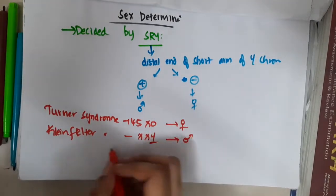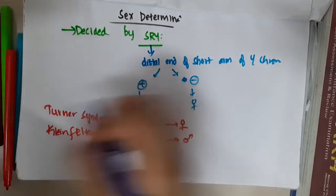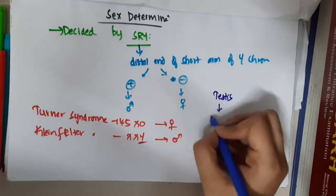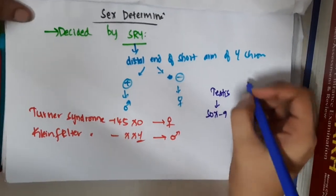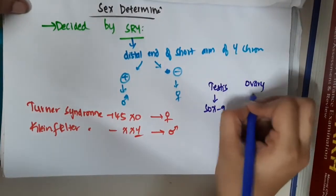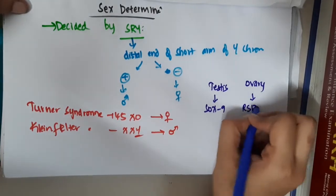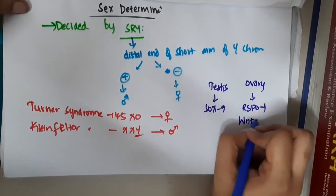If you see other genes, the genes which favor testes: testes is favored by SOX9 gene, and ovary is favored by the gene RSPO1 gene and WNT4 genes.